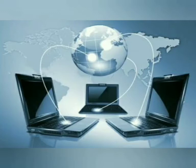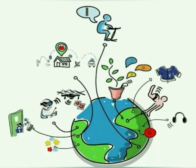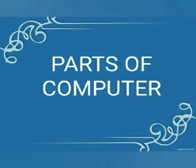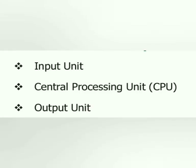It is necessary to note that there are three key units in a computer. Understanding these will make us operate a computer in an easy way. The parts of computer are classified into three main units. They are input unit, central processing unit, and output unit.